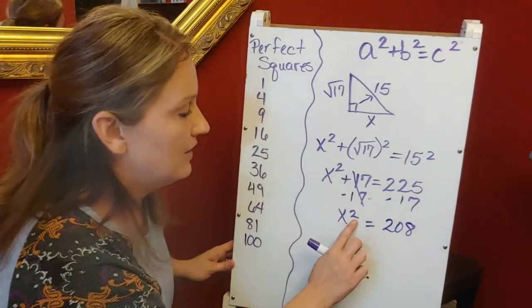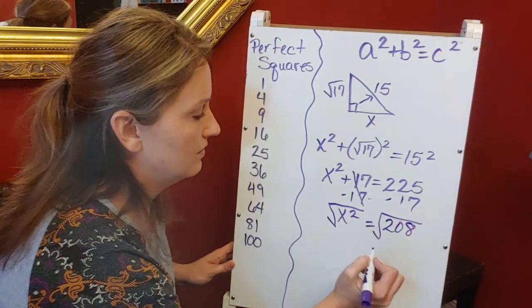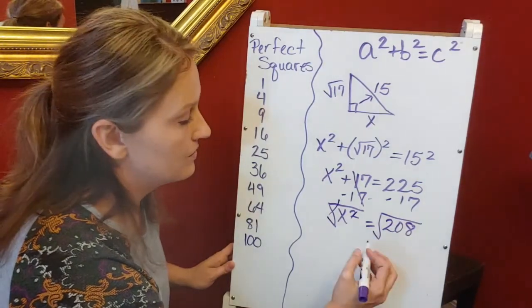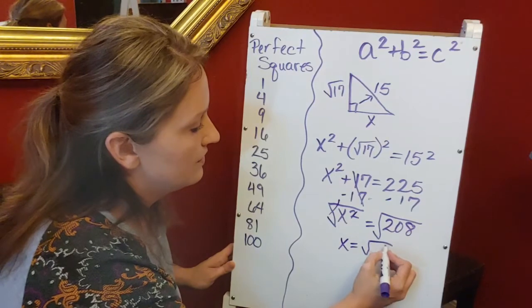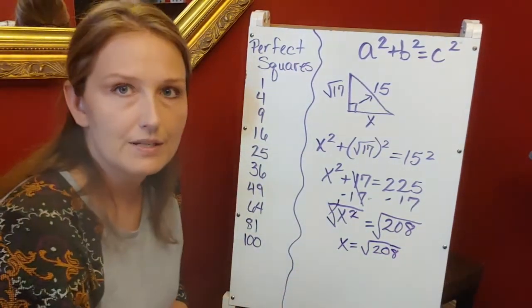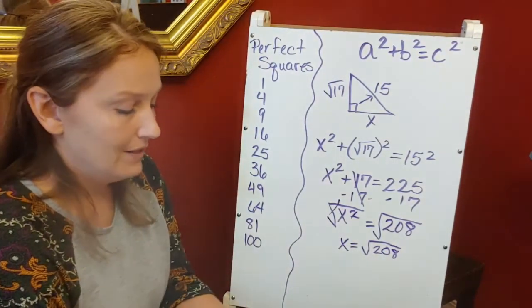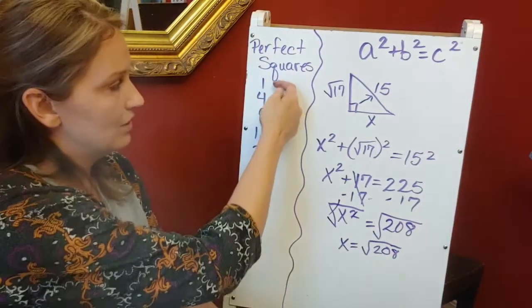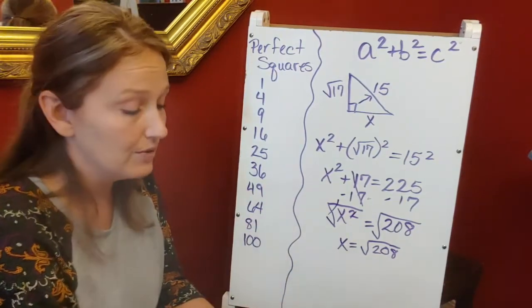To get rid of that squared, we take the square root. Those squares and square roots cancel each other out, so x = √208. This is where we simplify radicals. We take 208 and start dividing it by perfect squares to see which goes in evenly.